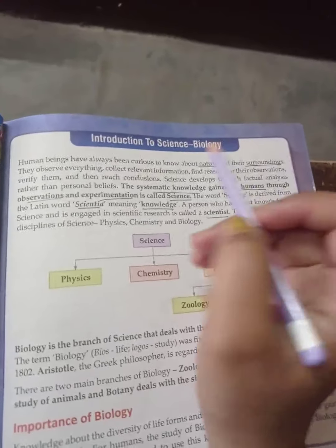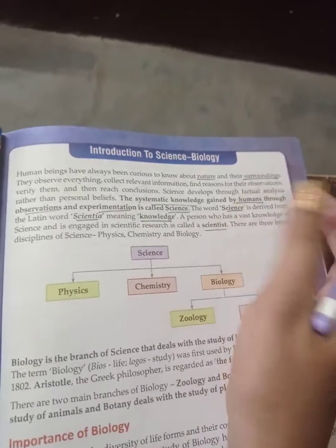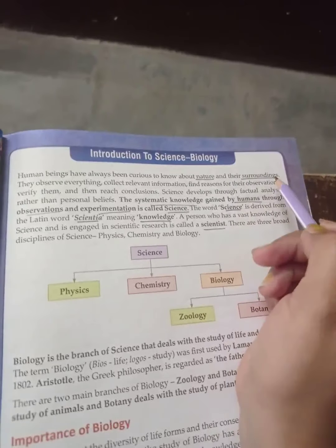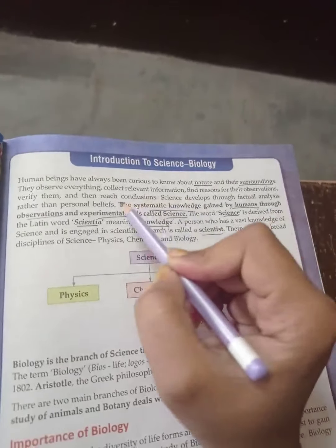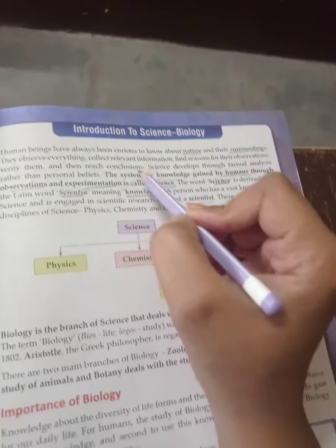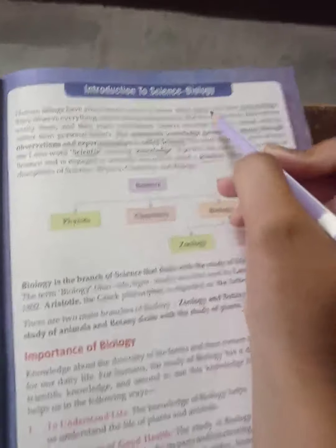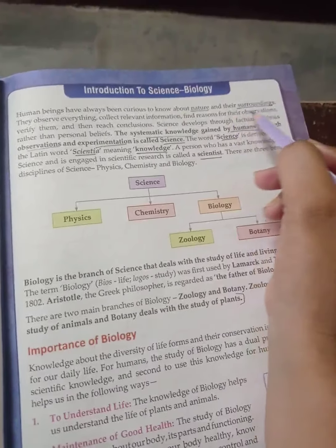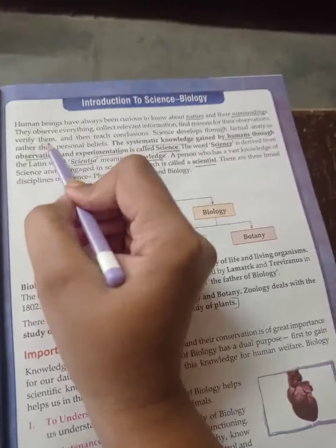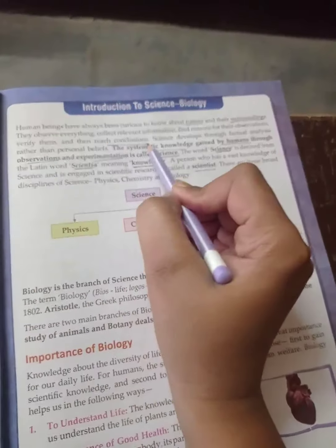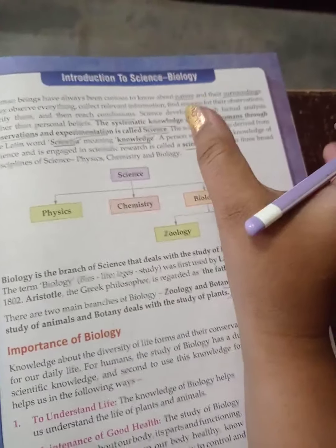What is biology? Human beings have always been curious to know about nature and their surroundings. They observe everything, collect relevant information, find reasons for their observations, verify them, and reach conclusions.